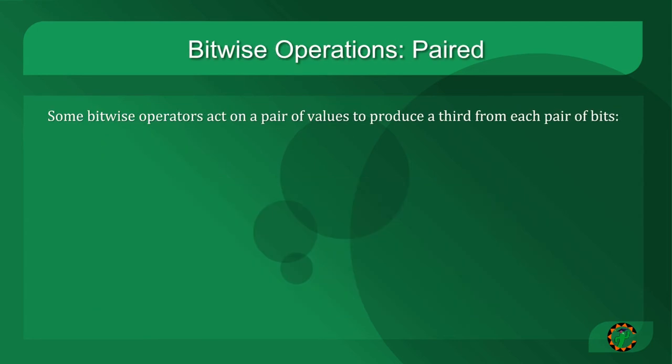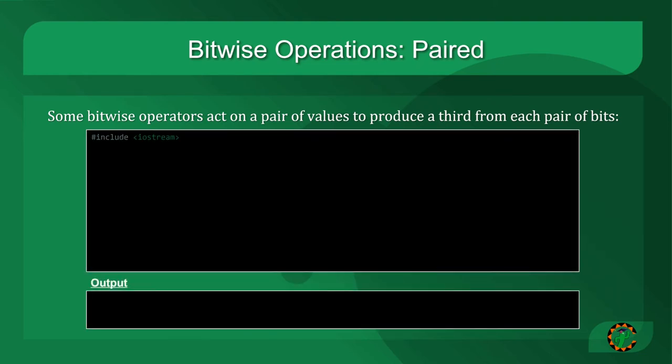One major category of bitwise operations are those that act on pairs of values. They take two different values and yield a third set of bits. In this example, we're going to use C++ and use the bitset from the standard template library to display the individual bits. When we use the bitset in C++, we put a number inside the angle brackets, and that number indicates how many bits we want to display. In this case, it's 8.